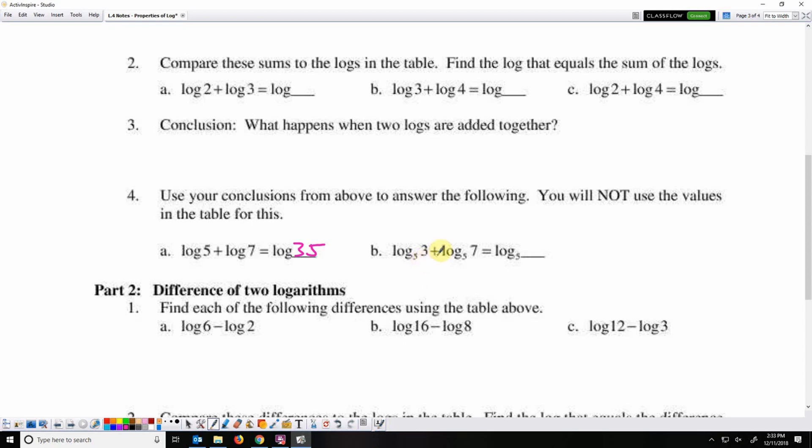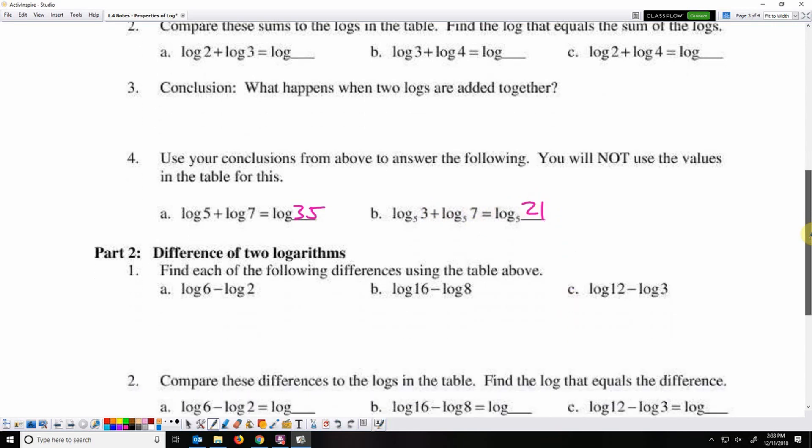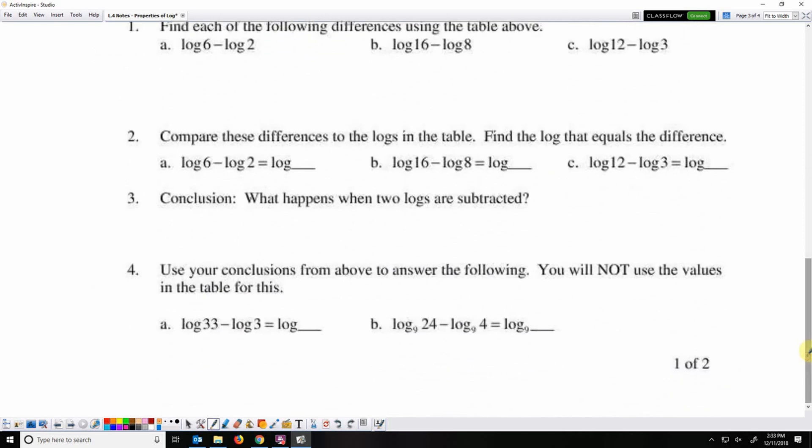Log base 5 of 3 plus log base 5 of 7 is log base 5 of 3 times 7, which is 21. Now subtraction, log 33 minus log 3 is the same as log 33 divided by 3, log 11. Log base 9 of 24 minus log base 9 of 4 is log base 9 of 24 divided by 4, which is 6.